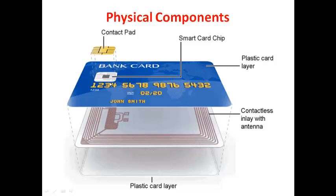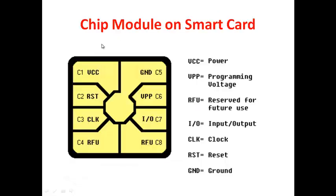Inside the smart card there is also a coil-like structure which serves as an antenna. Nowadays you don't even need to insert the card — just place it near the machine and it automatically senses through Wi-Fi enabled by the antenna inside the smart card.